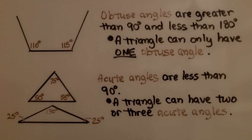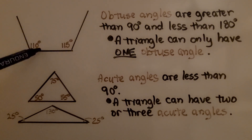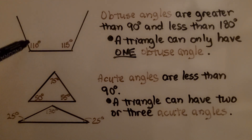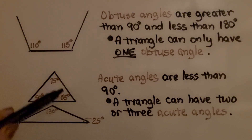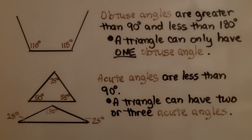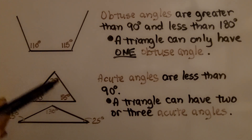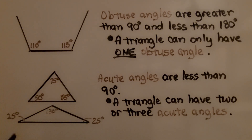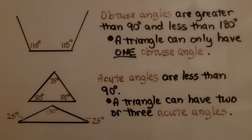As discussed in the previous video, obtuse angles are greater than 90 degrees and less than 180 degrees, and a triangle can only have one obtuse angle — if it had two, it wouldn't be able to close. Acute angles are less than 90 degrees, and a triangle can have two or three acute angles. This triangle has three acute angles, while this one has two acute angles and one obtuse angle.